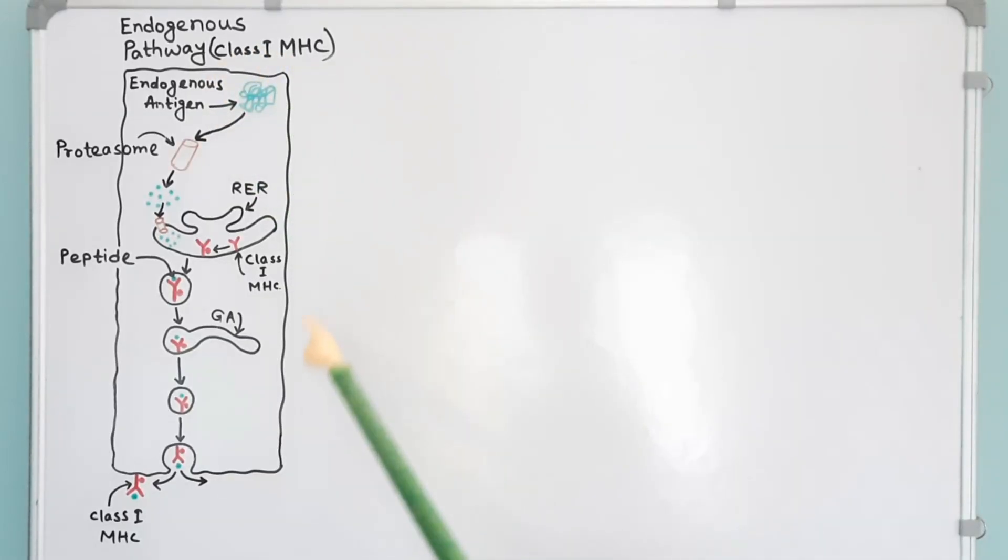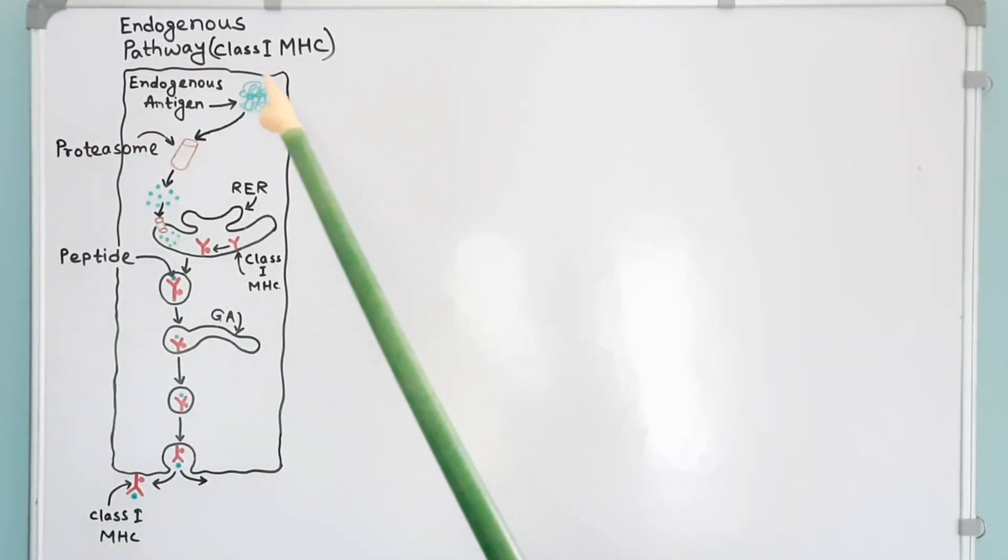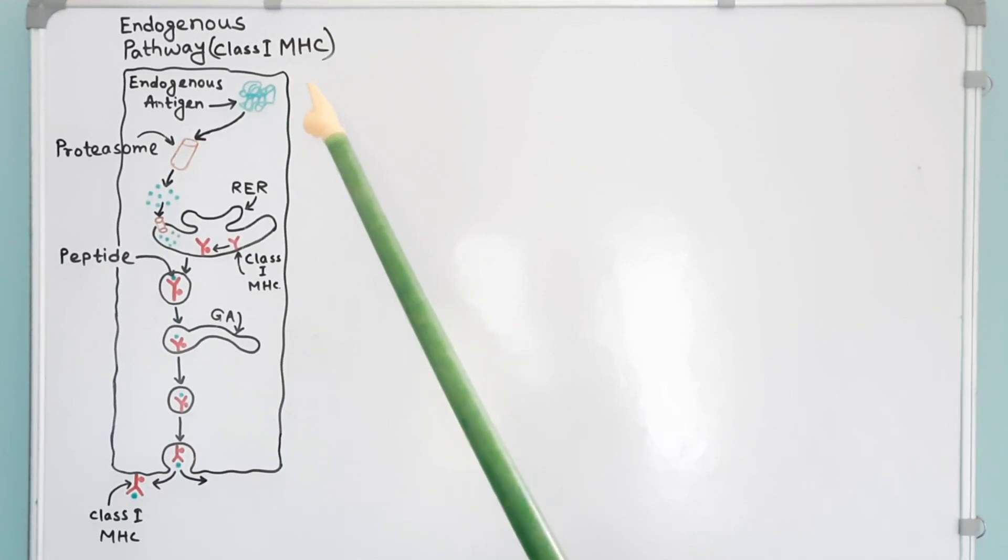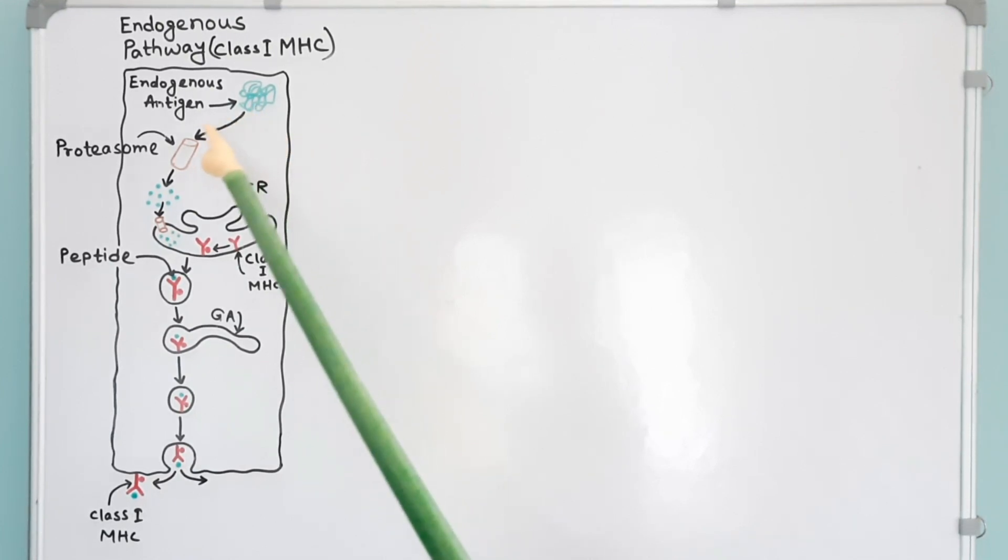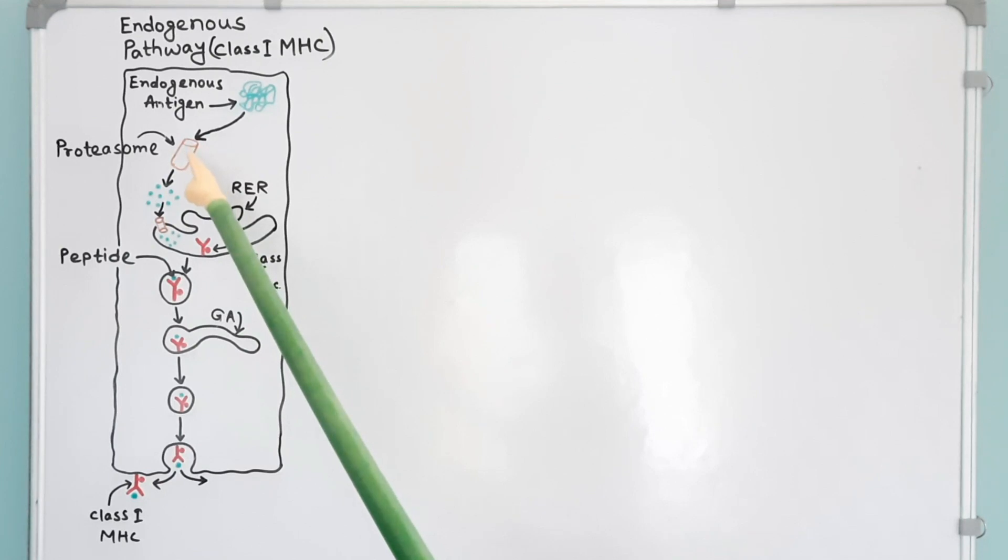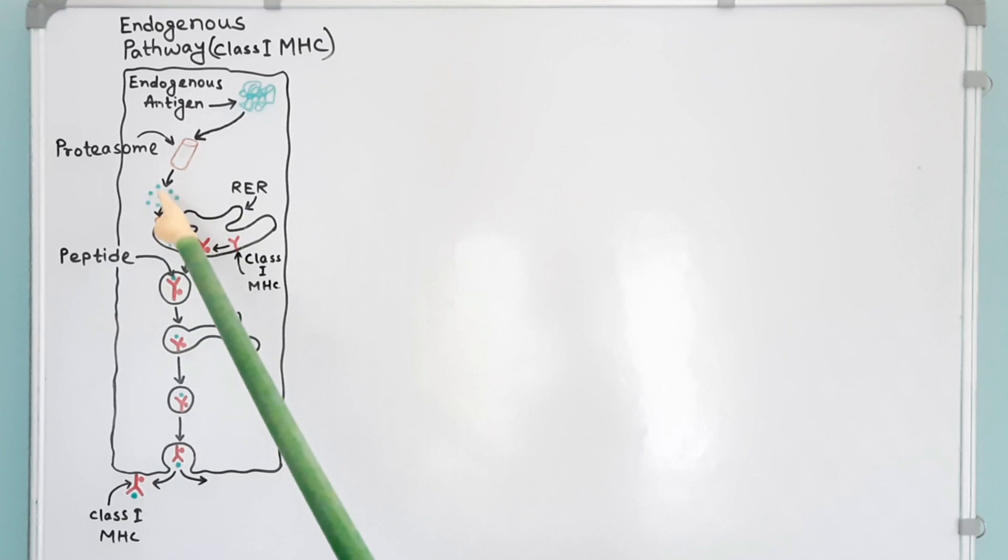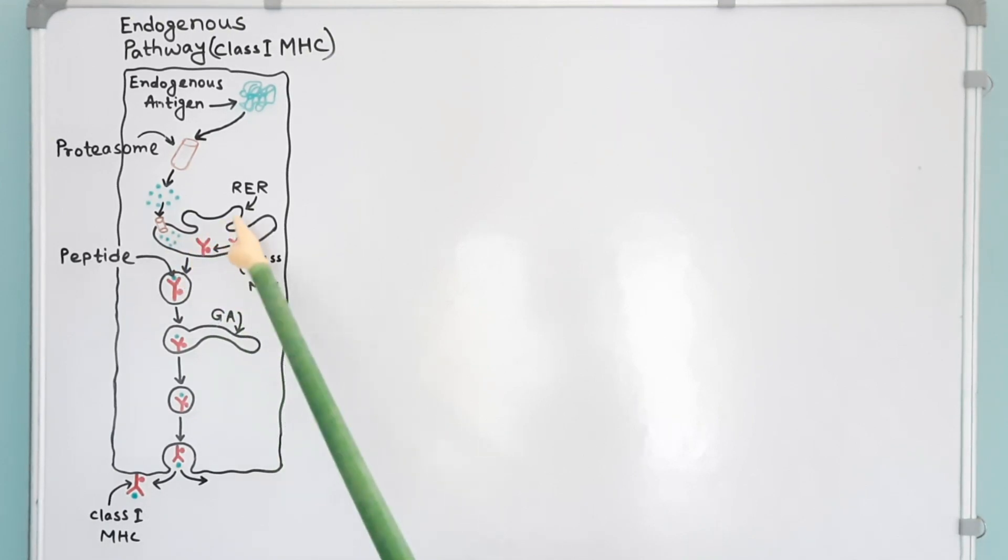This is a diagram showing an overview of endogenous pathway for processing antigen. Suppose this is an endogenous antigen. It is degraded by the proteasome. As a result, proteins are converted into smaller peptides. The peptides are then transported from the cytosol to the rough endoplasmic reticulum where MHC class 1 molecules are synthesized.